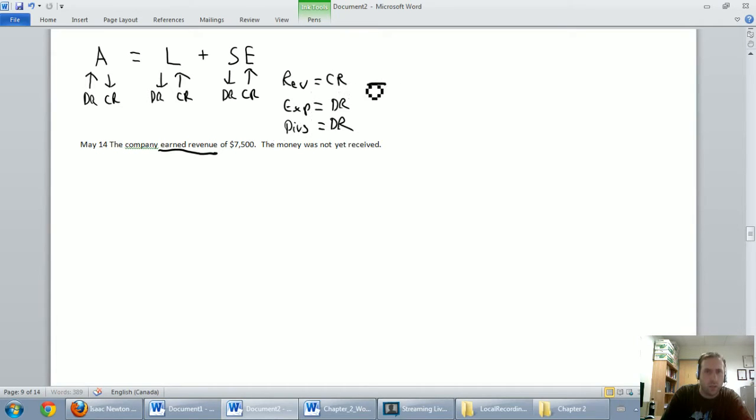Revenues always take a credit. So we're going to credit revenue, and we established that Kerjeet's computer does repair, so we're going to credit repair revenue for $7,500. I've left room for a debit.